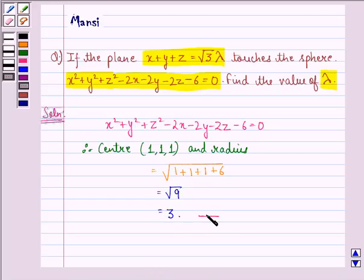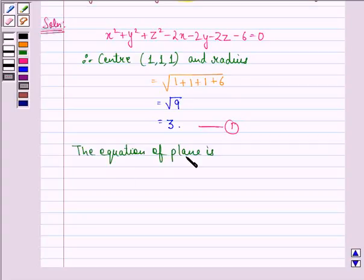Let us name this equation 1. Now the equation of plane is x + y + z - √3λ = 0. This we call equation 2.